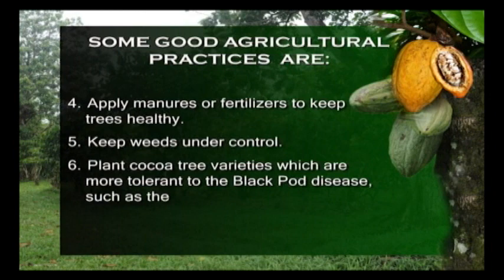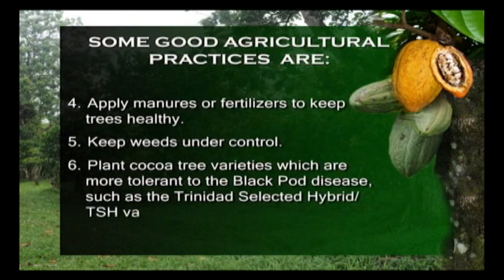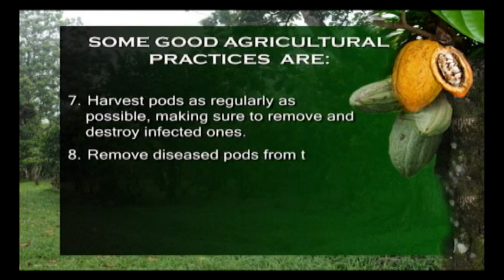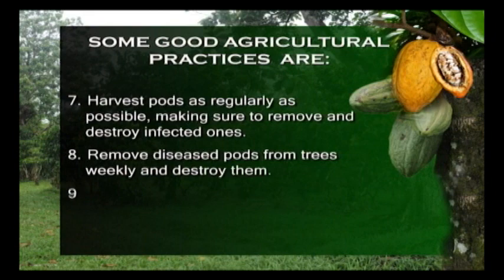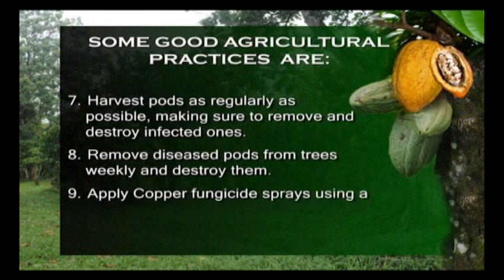Keep weeds under control. Plant cocoa tree varieties which are more tolerant to the black pod disease, such as the Trinidad Selected Hybrid or TSH varieties. Harvest pods as regularly as possible, making sure to remove and destroy infected ones. Remove diseased pods from trees weekly and destroy them. Apply copper fungicide sprays using a mist blower.